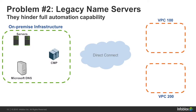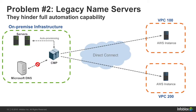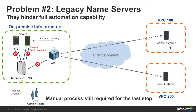The second problem we see is around legacy name service hindering full automation capability. Let's say we have some on-premise infrastructure with some server clients, a Microsoft DNS, and a cloud management platform. On the right, we have two VPCs running in Amazon, and the cloud management platform wants to provision some instances either in AWS or on-premise via some auto-provisioning scripts. The issue is that the cloud management platform can't talk nicely to Microsoft DNS to get IP addressing or even to insert DNS authority records in Microsoft. What ends up happening is a broken DNS resolution — these servers have no way of resolving DNS names sitting in AWS. What then happens is a manual process, where DNS administrators manually insert the changes in Microsoft in order for those DNS resolutions to work.